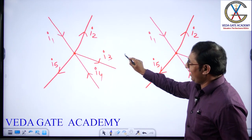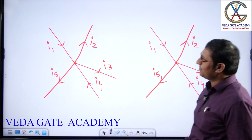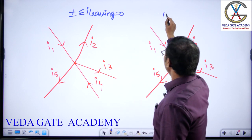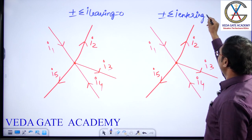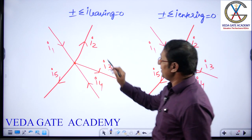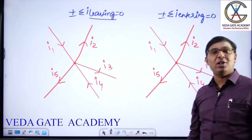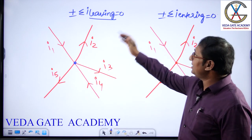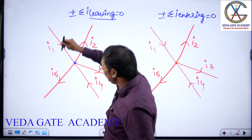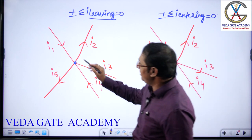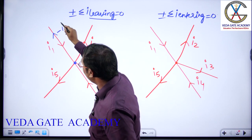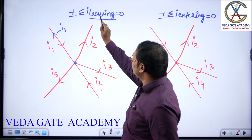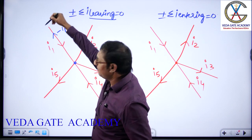Let us take one circuit and analyze the definition of KCL. I wish to use the statement: algebraic sum of currents leaving the principal node equals zero. To use this definition, what currents do I want in all branches? Obviously leaving currents. I1 current — is it entering or leaving the node? It is entering the node. To use this definition I want leaving current, so it becomes minus I1. I2 current is leaving the node — perfectly matched. I3 current is leaving the node — perfectly matched. I4 current is entering the node, so leaving current is minus I4. I5 current is leaving — perfectly matched.